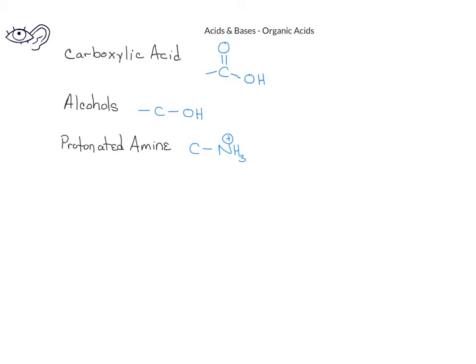When we compare the acidity of these different compounds, we can look at the approximate pKa values for each class of organic compounds. For carboxylic acids, these compounds typically have pKa values of about 5. Protonated amines, on the other hand, will have pKa values of about 10. Alcohols, and also water, which is very similar, will have pKa values of approximately 15. Given these values, you should take a few minutes to decide which of these types of compounds is most acidic and which is least acidic.